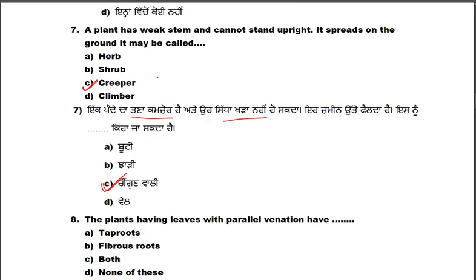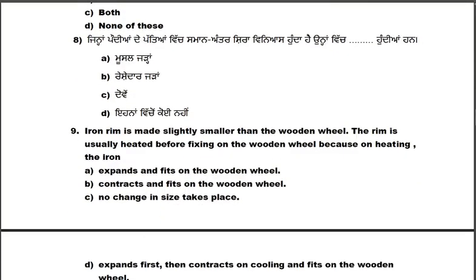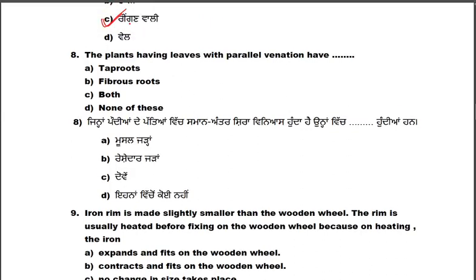The next question: plants having leaves with parallel venation have which type of roots — taproot, fibrous root, both, or none of these? Plants with parallel venation have fibrous roots.